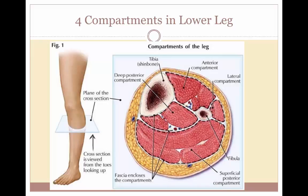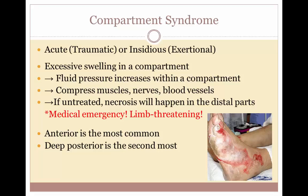Severe damage to nerve and blood vessels around the muscles can cause the muscles to die and amputation may be necessary. Compartment syndrome is a painful condition that occurs when pressure within the muscles builds to a dangerous level, decreasing blood flow and preventing nourishment and oxygen from reaching nerve and muscle cells. Compartment syndrome can be acute or chronic. Acute compartment syndrome is a medical emergency usually caused by a severe injury; without treatment, it can lead to permanent muscle damage or amputation. Chronic compartment syndrome, also known as exertional compartment syndrome, is usually not a medical emergency and is most often caused by athletic exertion. Compartment syndrome develops when swelling or bleeding occurs within a compartment, and because the fascia does not stretch, this causes increased pressure in the capillaries, nerves, and muscles.